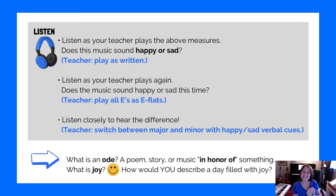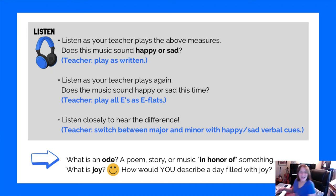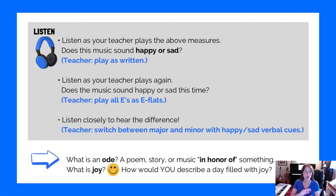Then the next prompt says: listen as your teacher plays again — does the music sound happy or sad this time? The instruction says: teacher, play all E's as E flats. Obviously that's going to take the piece and turn it into minor. So I'll play it for the student with minor cadence chords, like C minor to G7. Sometimes students can go 'oh yeah, that's sad,' but if you play another one they'll go 'I'm not sure.' The most important thing is to constantly contrast the happy and the sad — major and minor sounds back to back.